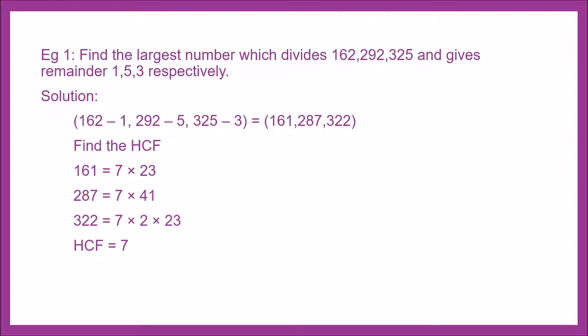Solution: 162 minus 1, 292 minus 5, 325 minus 3. This gives us (161, 287, 322). We have three numbers.